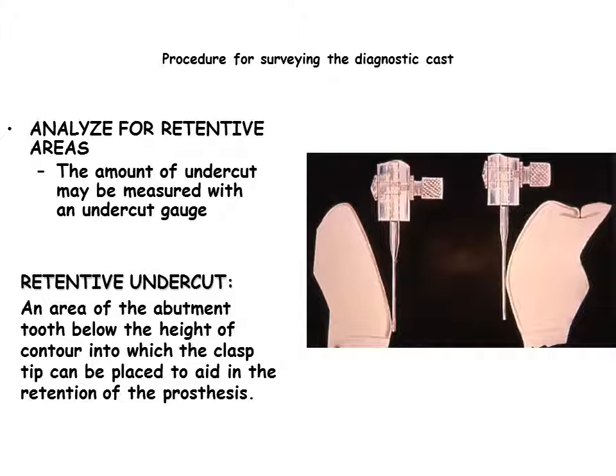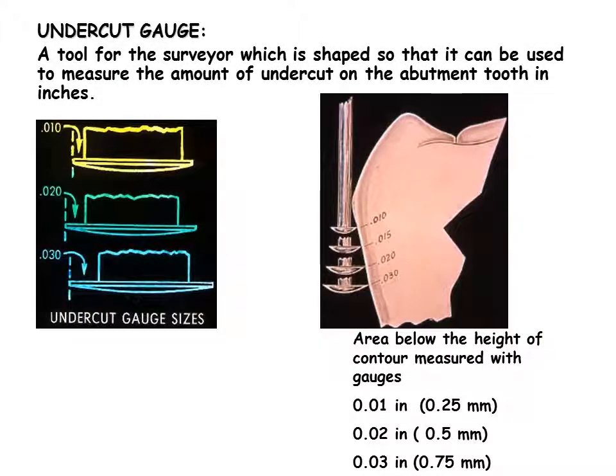After locating suitable guiding planes, the cast is examined for potential areas of retention. Buccal and lingual surfaces between the line angles are examined. Areas in the gingival one-third, apical to the survey line, are preferred. Useful undercut areas are measured. Cast clasps require 0.01-inch retentive undercut, whereas wrought wire requires 0.02-inch undercut. If more retention is desired, it is preferable to clasp more teeth than to increase the depth of undercut on a given tooth.